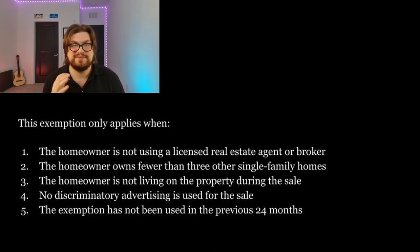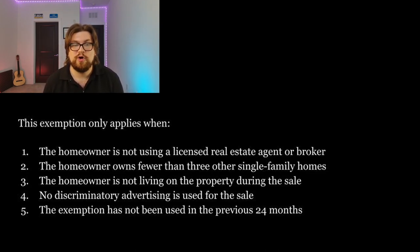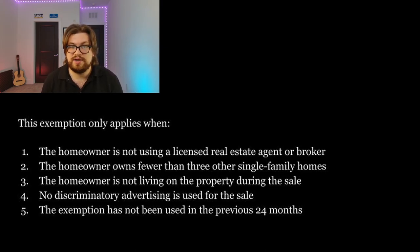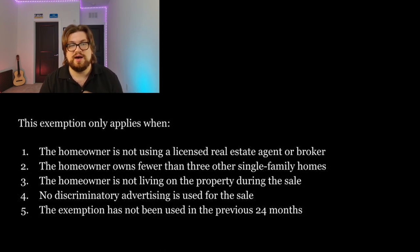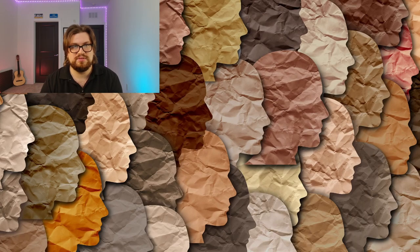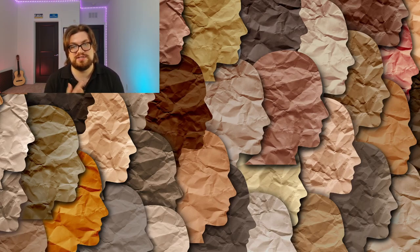There are five conditions that must be met to use the single-family home exemption: one, the homeowner is not using a licensed real estate agent or broker; two, the homeowner owns fewer than three other single-family homes; three, the homeowner is not living on the property during the sale; four, no discriminatory advertising is used for the sale; and five, the exemption has not been used in the previous 24 months. Importantly, this exemption does not allow homeowners to discriminate based on race — they can only discriminate against characteristics such as sex, religion, or familial status. There is no exemption to the Federal Fair Housing Act that allows housing providers to discriminate racially.